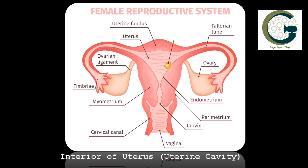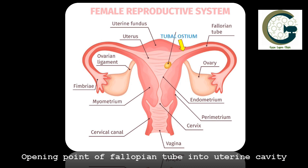On the two sides of the uterus are the two openings of the fallopian tubes, also called as the tubal ostia. There is a tubal ostium on the right side and a tubal ostium on the left side.